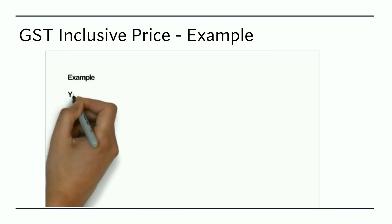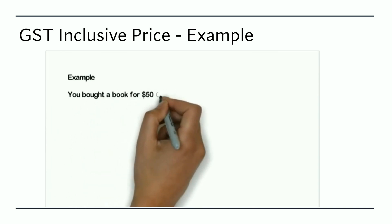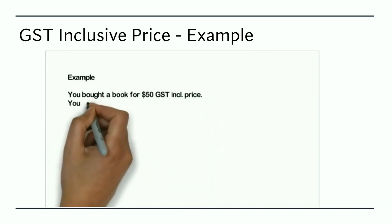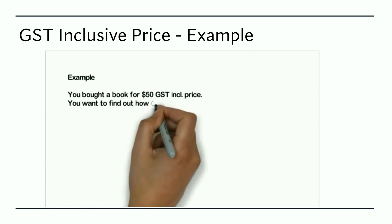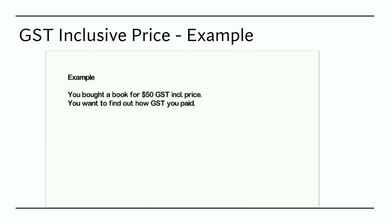For example, you buy a book for $50 GST inclusive price and want to know how much GST was paid. So you take the $50 and this is then divided by 1 plus the GST.